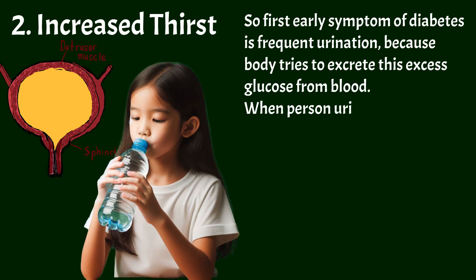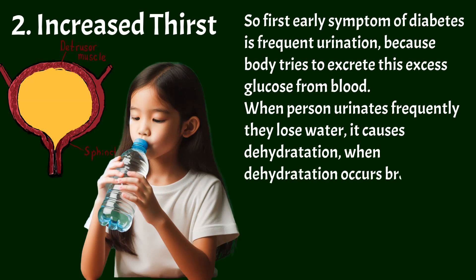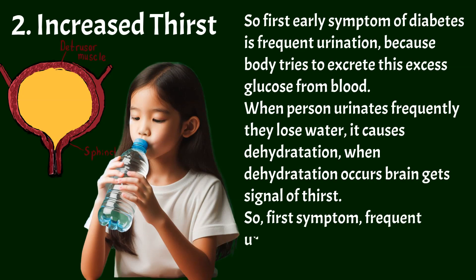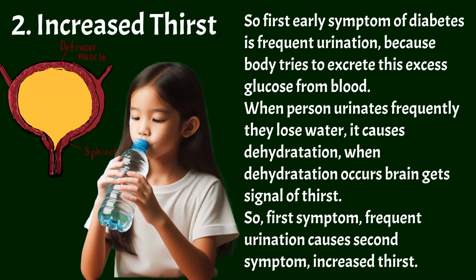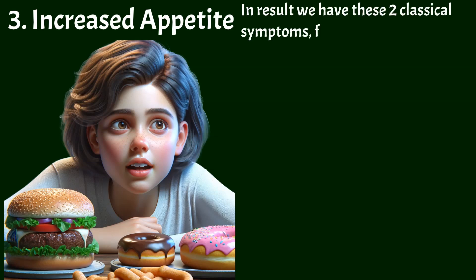When a person urinates frequently, they lose water, which causes dehydration. When dehydration occurs, the brain receives a signal of thirst. So the first symptom — frequent urination — causes the second symptom: increased thirst. Together, these two are the classical symptoms of type 1 diabetes.